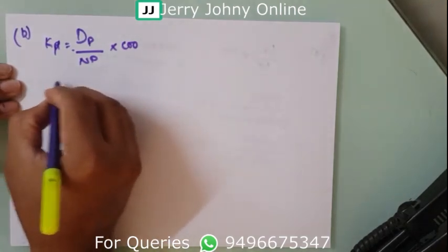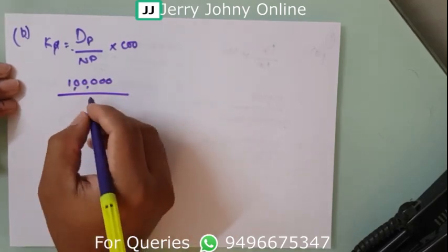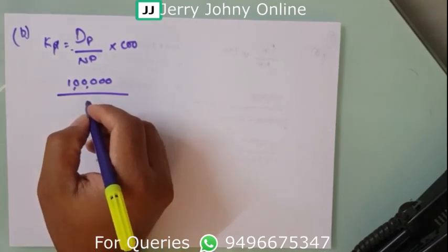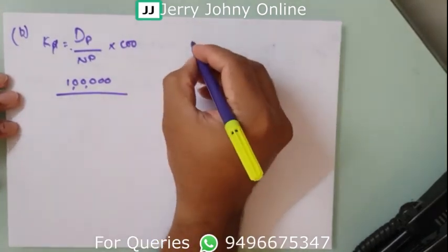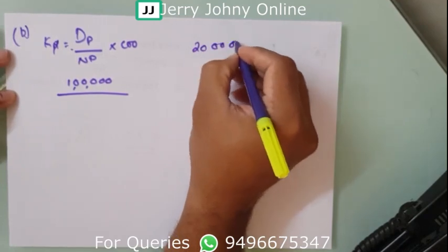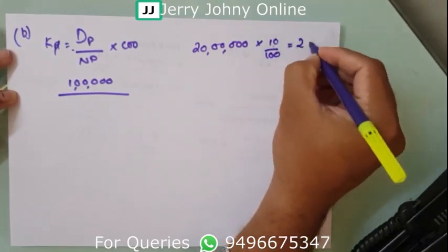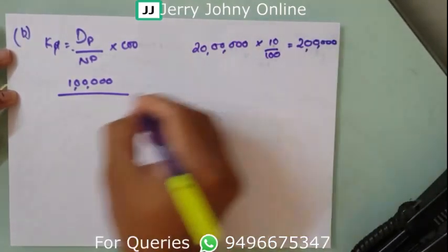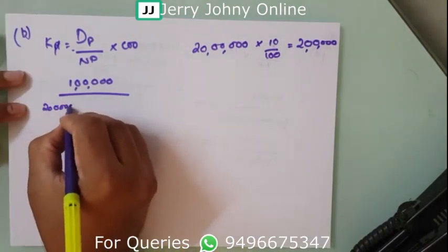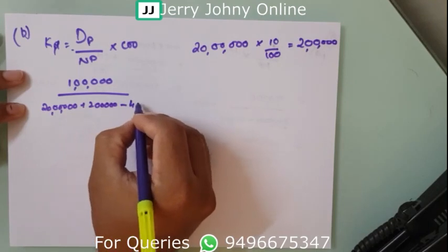Now NP is affected by the premium. The face value amount is ₹20 lakhs. At 10% premium, that is ₹2 lakhs extra. So issue proceeds = ₹20 lakhs + ₹2 lakhs = ₹22 lakhs. Then we deduct flotation cost of ₹40,000, giving NP = ₹21,60,000.